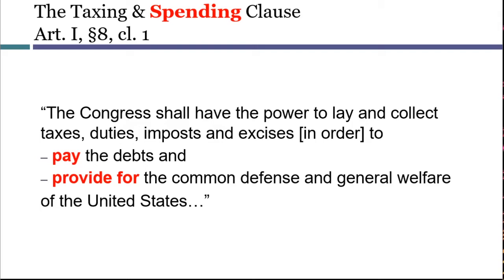The spending power also explains why the federal government today has a significant role in education policy. Congress does not have an enumerated power specifically dedicated to education, but modern Congresses have chosen to spend money on education because they think it's part of the general welfare. Especially since World War II, the spending power has become the basis for a great deal of federal government activity — from road building to poverty reduction to support for the arts and sciences.